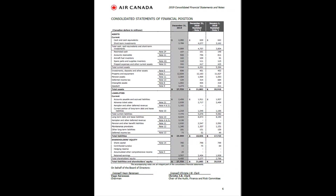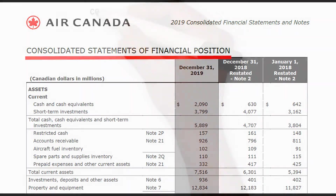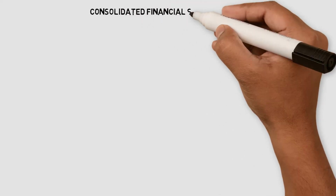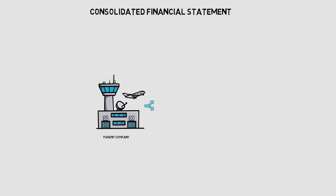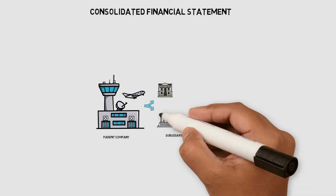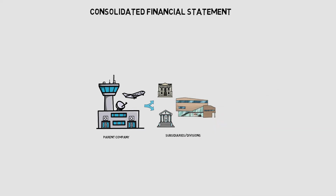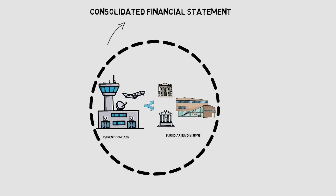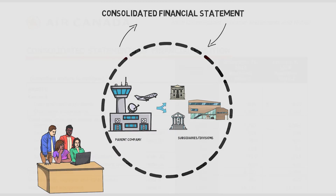Here is a financial statement of Air Canada called the consolidated statements of financial position. A consolidated financial statement is a financial statement for the parent company and all of its subsidiaries presented as one single economic entity. In other words, the main parent company and all its subsidiaries and divisions' activities are compressed into one final statement for investors to get the whole picture of the company's well-being.